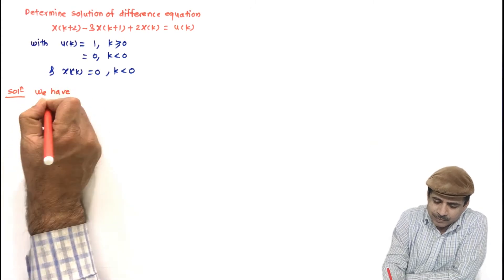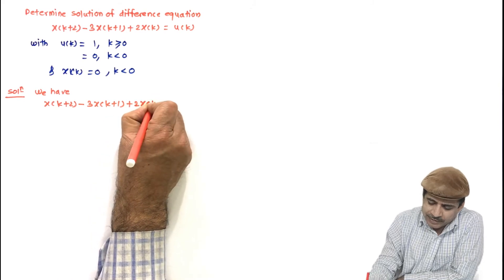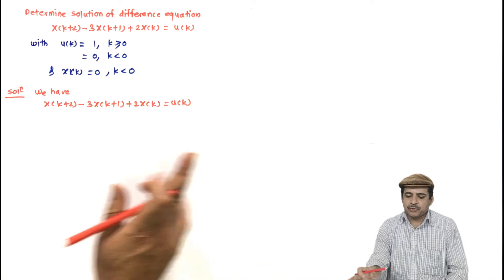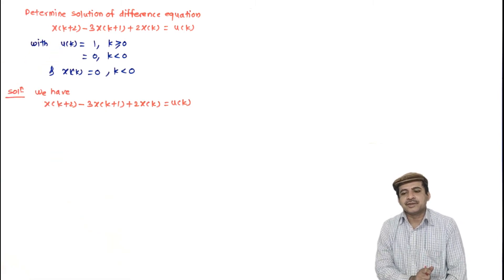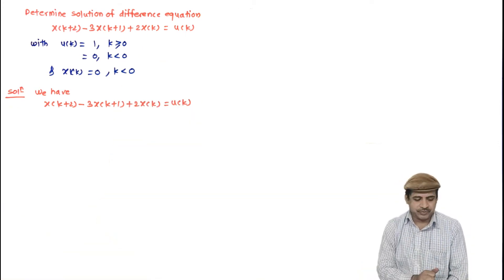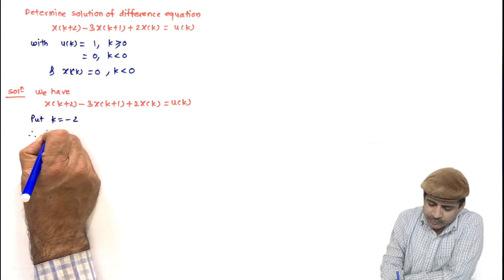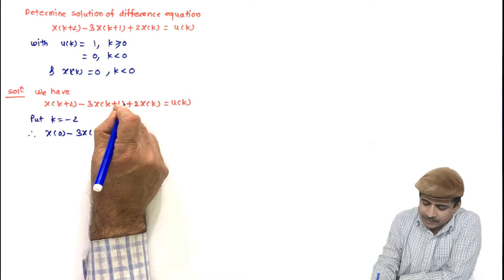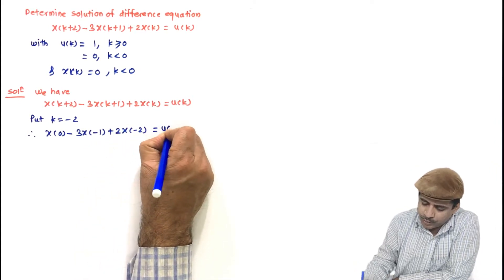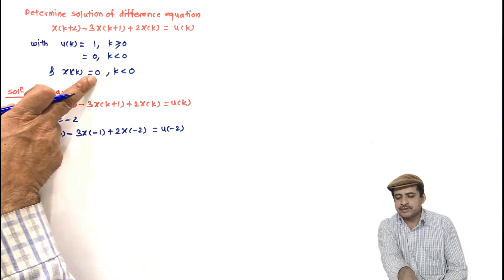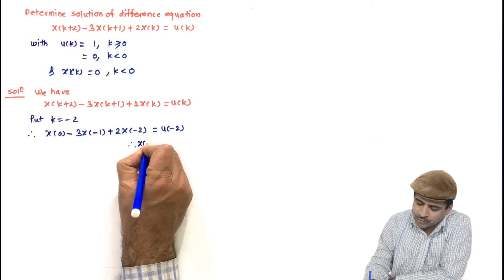We have x(k+2) − 3x(k+1) + 2x(k) = u(k). Taking the Z transform requires x(0) and x(1), which are not given. We can generate them from the input signal. Put k = −2: x(0) − 3x(−1) + 2x(−2) = u(−2). Since x(k) = 0 for k < 0 and u(k) = 0 for k < 0, all terms are zero, giving x(0) = 0.